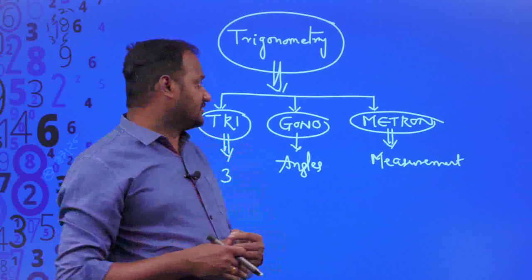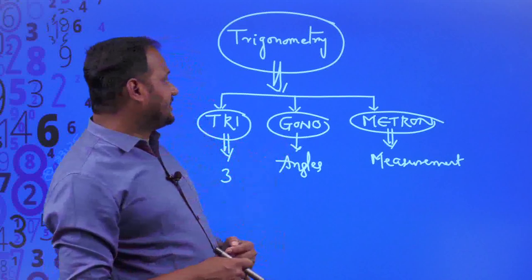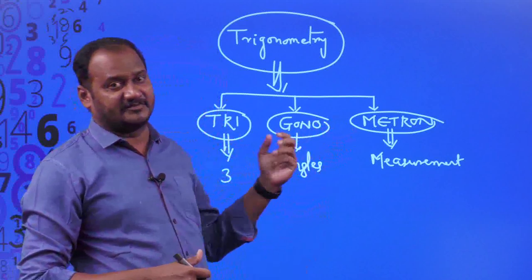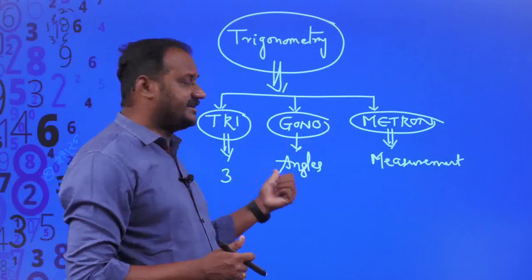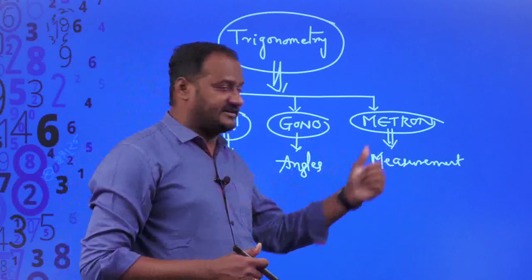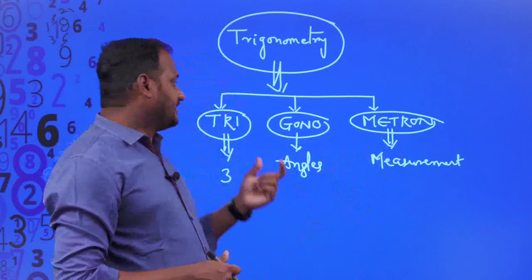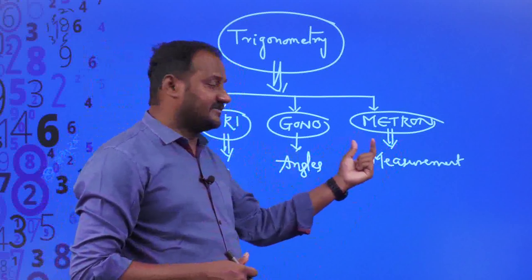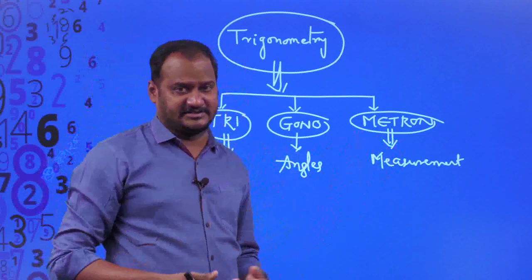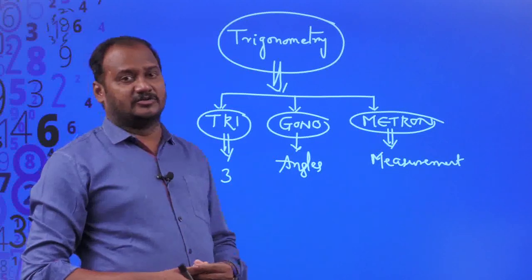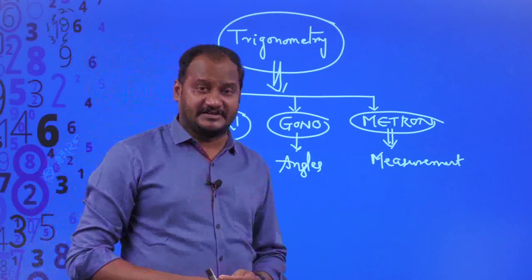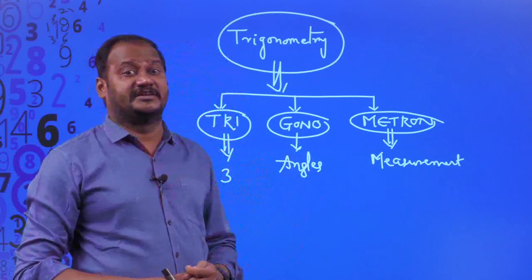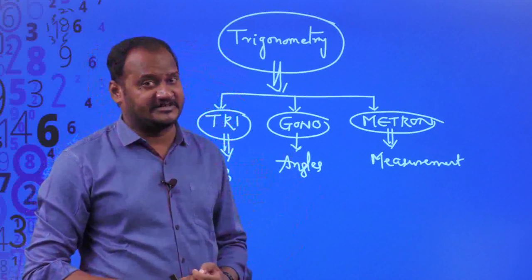Let us understand what trigonometry is all about. The word trigonometry is derived from three Greek roots: TRI, GONO, and METRON. TRI means three, GONO means angles, and METRON means measurement. On the whole, trigonometry means the study of a triangle, and it gives the relationship between the sides and angles of a triangle.